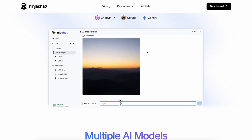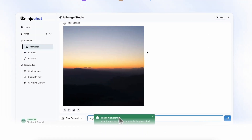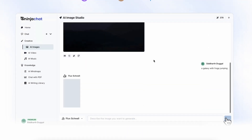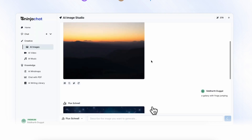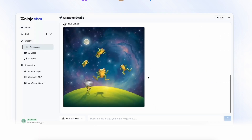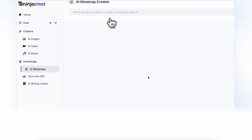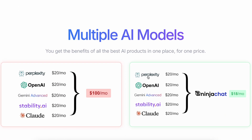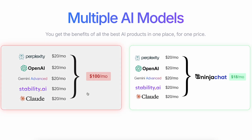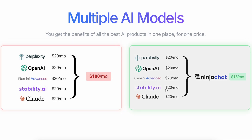First of all, if you don't know about NinjaChat, let me tell you quickly about it. NinjaChat is an all-in-one AI assistant that gives you access to a bunch of models like Anthropic's Claude 3.5 Sonnet, GPT-4o, Gemini, image generators, as well as video generators, all for the cost of less than one ChatGPT membership.